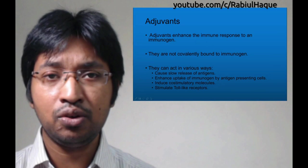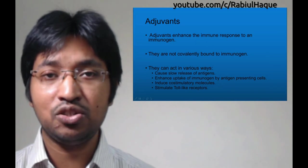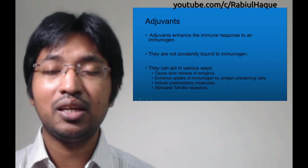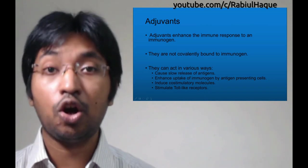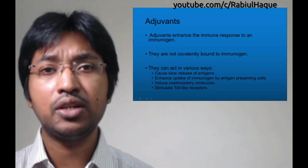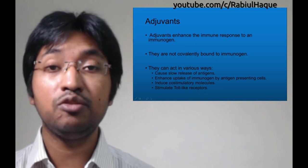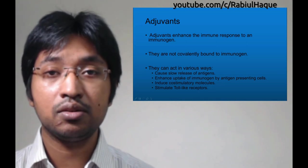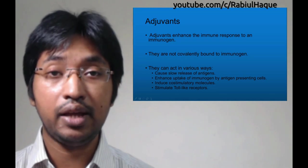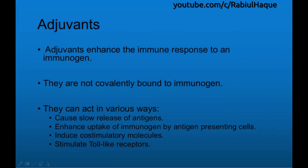Whenever examiners hear the term antigen-presenting cells, they are very fond of asking what they are. Always remember: macrophages, dendritic cells, and B-lymphocytes are the antigen-presenting cells — always remember their names. Adjuvants can also act by inducing co-stimulatory molecules and by stimulating toll-like receptors.